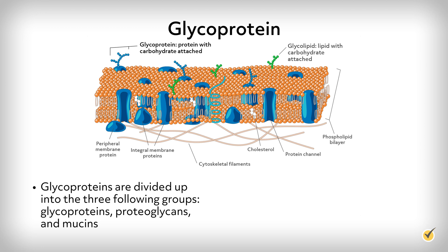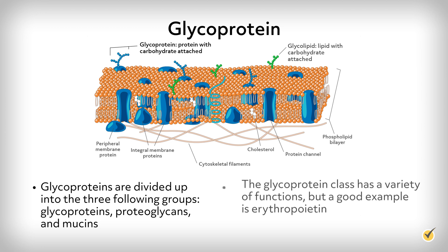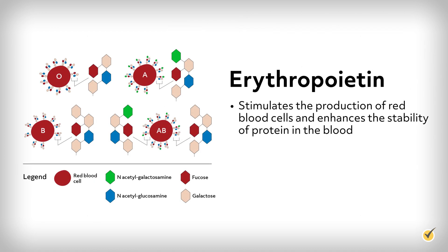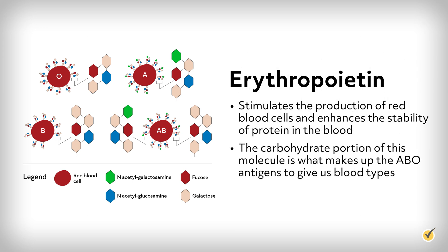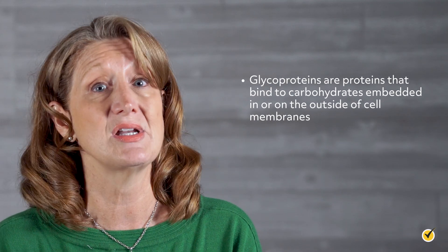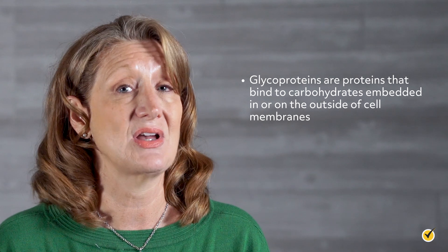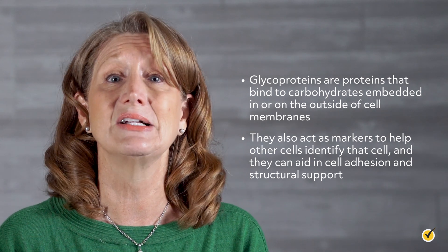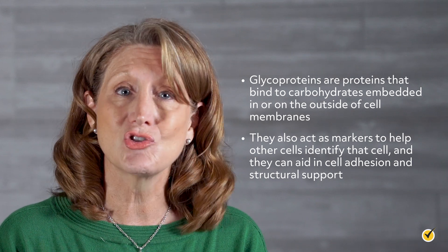The glycoprotein class has a variety of functions, but a good example is erythropoietin. Erythropoietin stimulates the production of red blood cells and enhances the stability of protein in the blood. The carbohydrate portion of this molecule is what makes up the ABO antigens to give us blood types. In general, glycoproteins are proteins that bind to carbohydrates embedded in or on the outside of cell membranes. They also act as markers to help other cells identify that cell, and they can aid in cell adhesion and structural support.